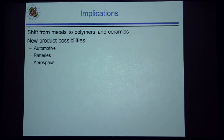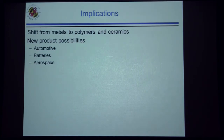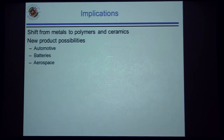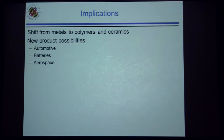Processing, design, and predicting properties of these advanced polymers are challenging, requiring high-performance computing and simulations. The implication is a shift away from metals — traditionally the material of choice in engineering — toward polymers and ceramics. These advanced polymers are creating new product possibilities in the automotive sector, batteries, and aerospace sectors.